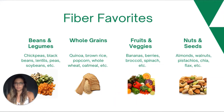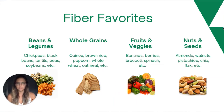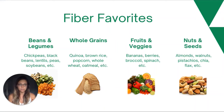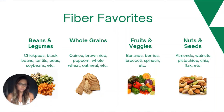Now let's talk about where you can get fiber from. There are four broad categories of high-fiber foods: beans and legumes, whole grains, fruits and vegetables, and nuts and seeds.